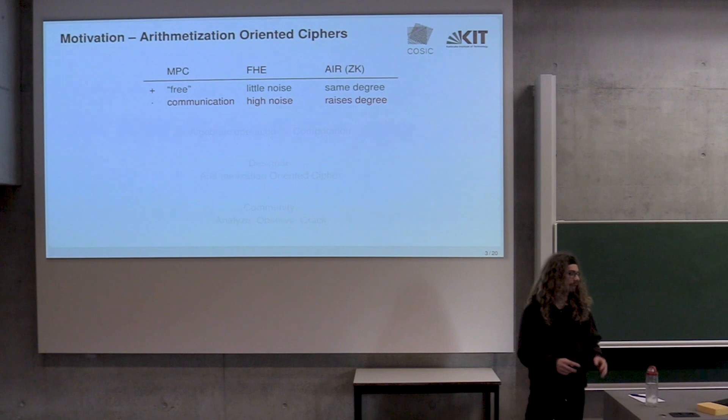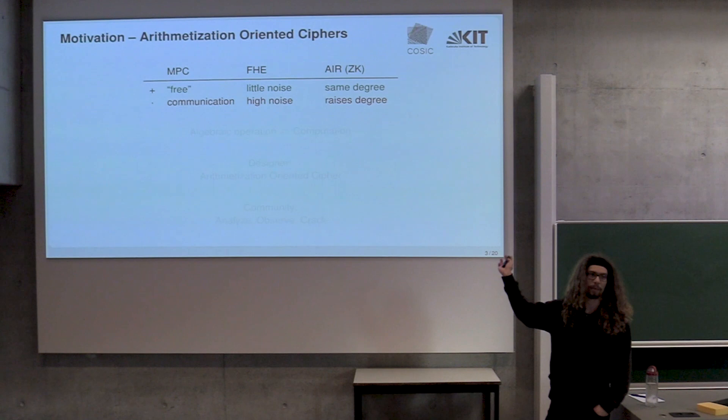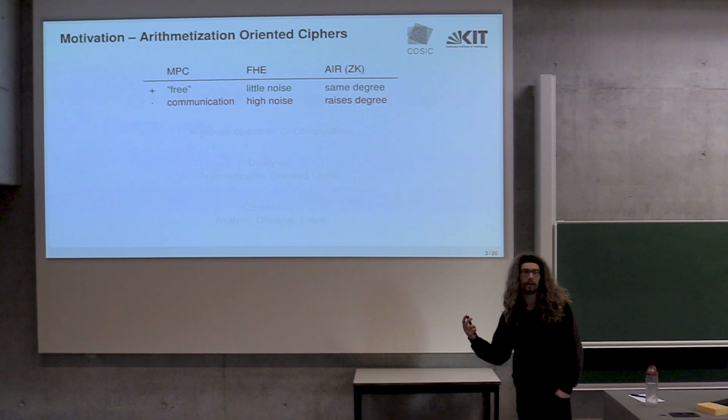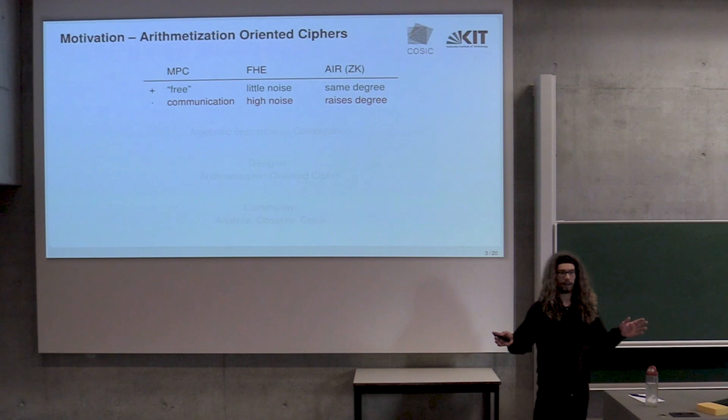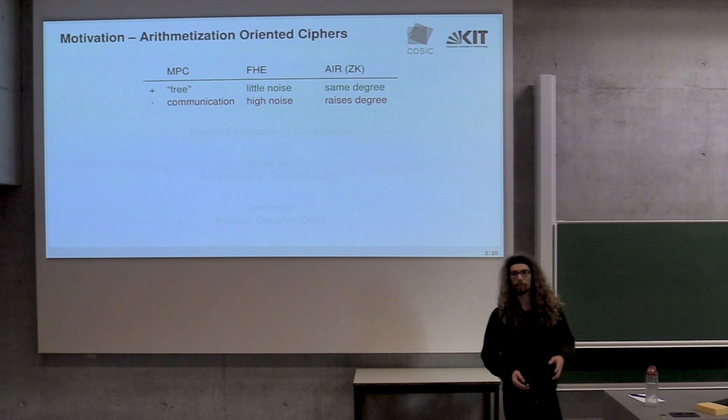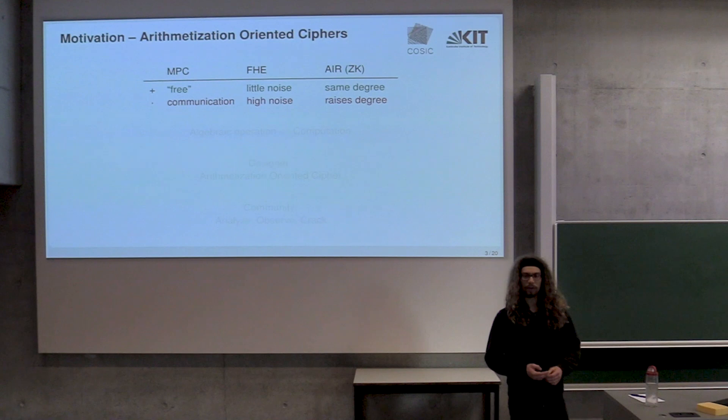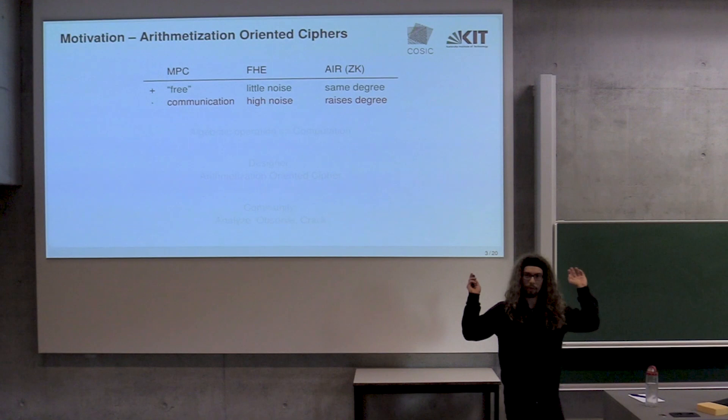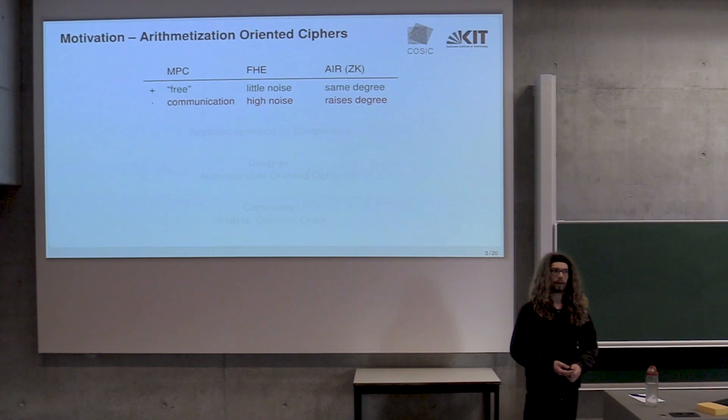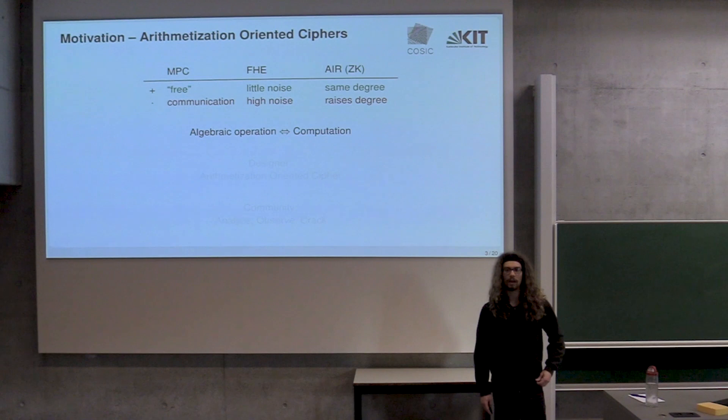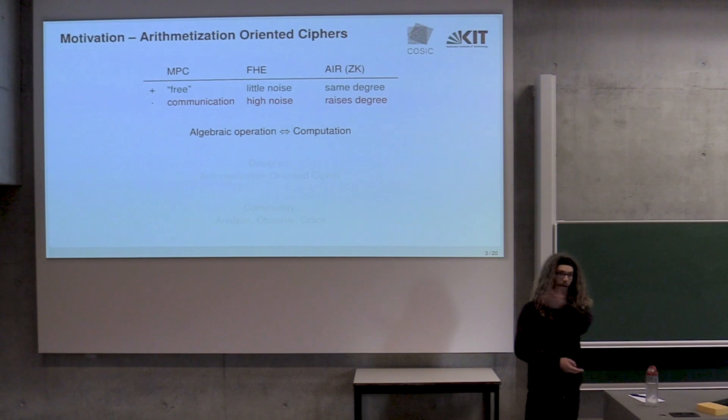The motivation is: consider MPC, ZK proofs, and some forms of zero knowledge proofs, specifically if they use an arithmetic intermediate representation. They all share the fact that additions or linear operations come for free and nonlinear operations like multiplications are expensive for different metrics.